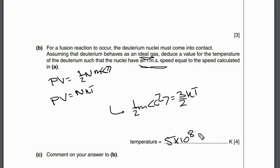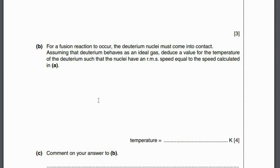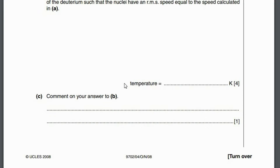Comment on the answer: 5×10⁸ K is an extremely high temperature, not achievable anywhere on Earth. The only place where such temperatures are reached is in the cores of stars, where these fusion processes actually occur.